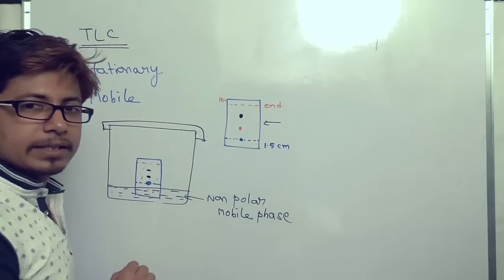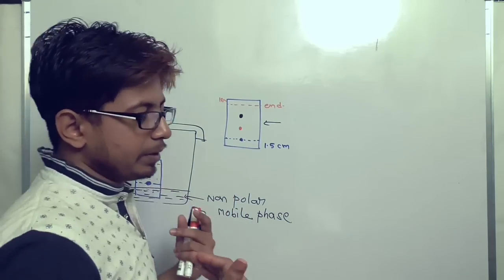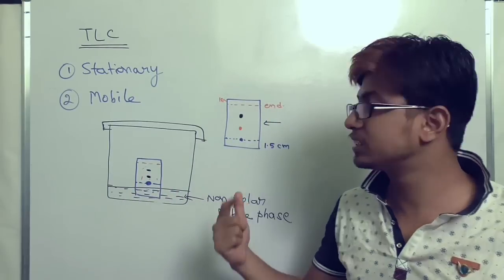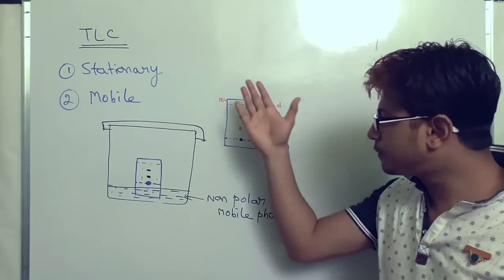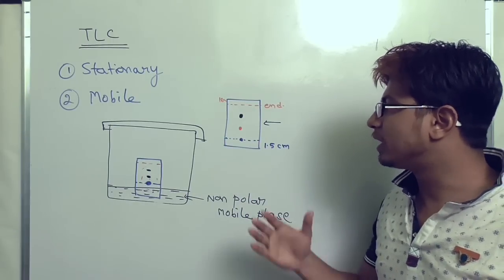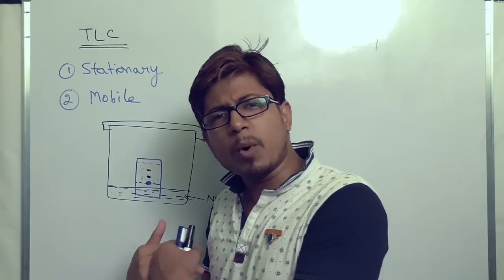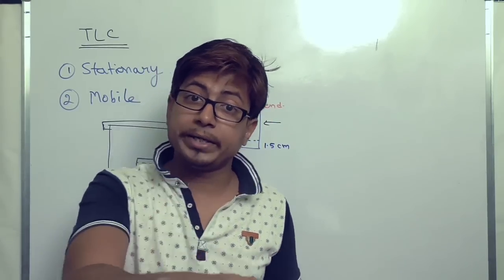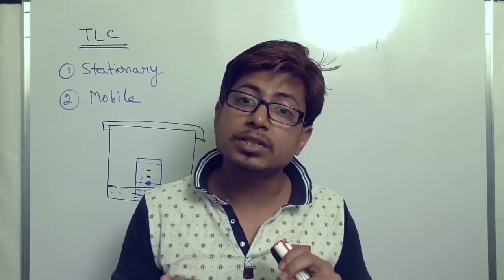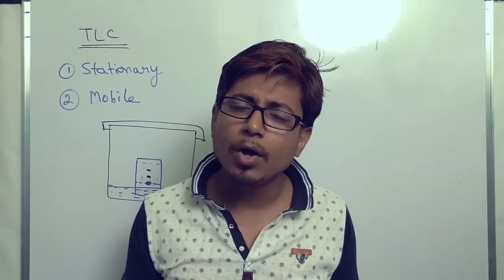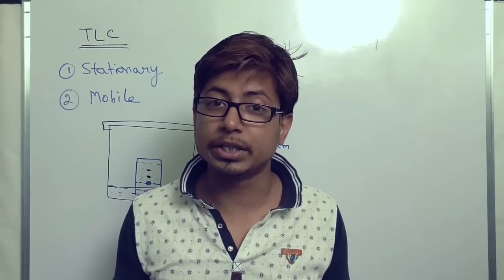By looking at the TLC plate you can easily tell what separate specimens are present in your mixture. Now the question is — is this qualitative or quantitative? The answer is it is quantitative. You can quantify the presence and concentration of each specimen. The calculation is done using the RF value, or retention factor: the distance traveled by each spot divided by the total distance traveled by the solvent.